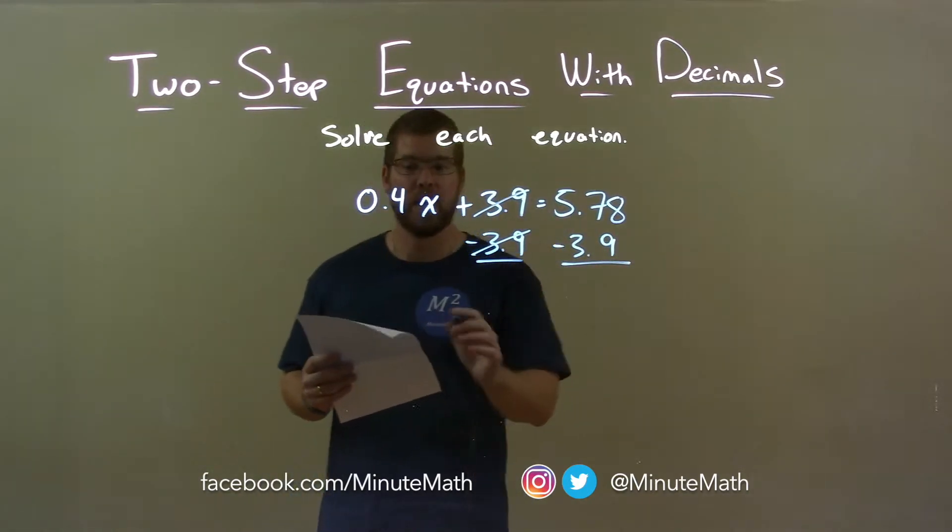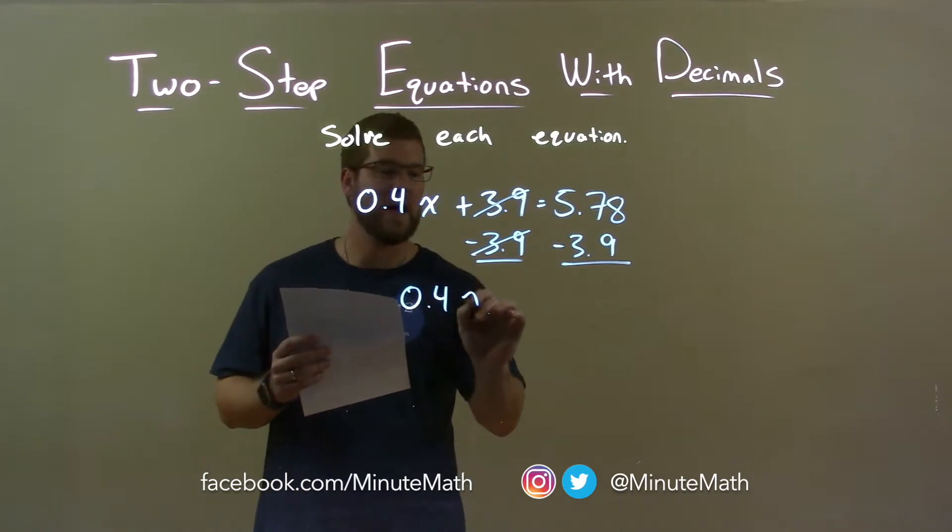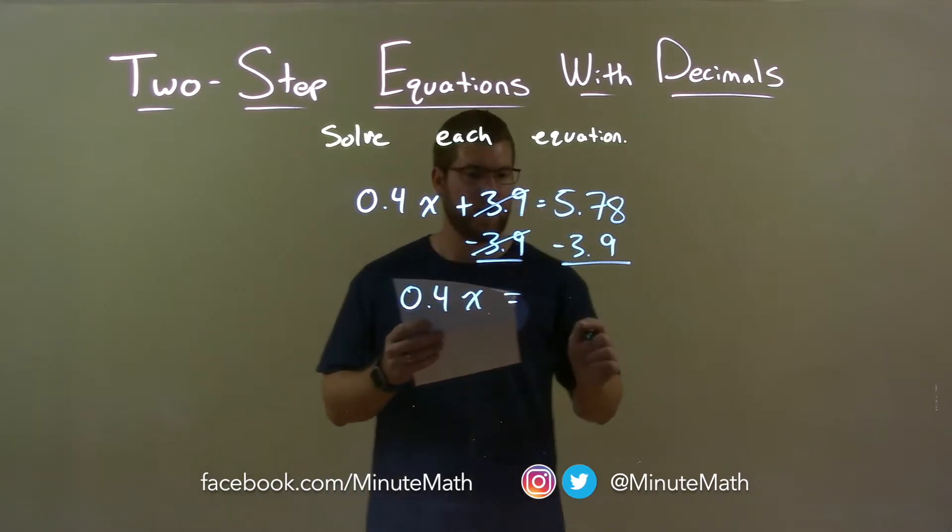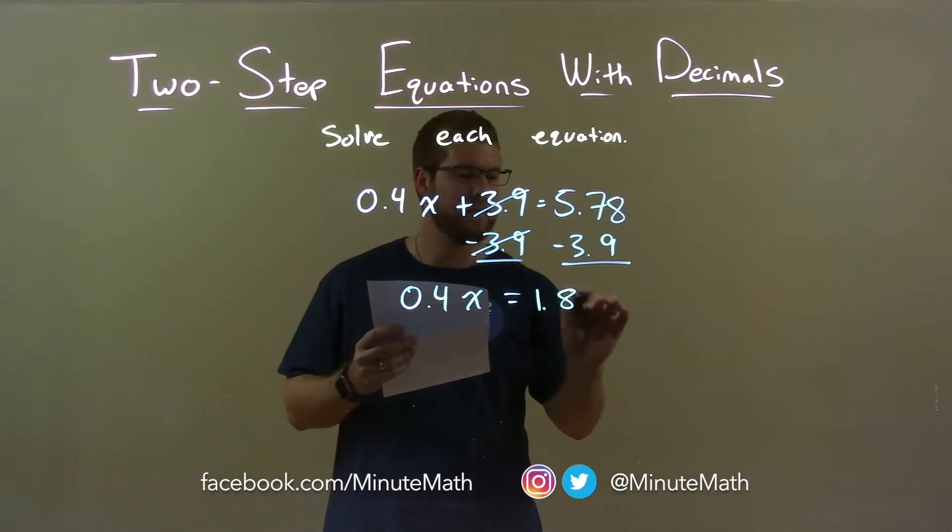3.9 gets eliminated on the left, giving me 0.4x by itself on the left. On the right, 5.78 minus 3.9 comes out to be 1.88.